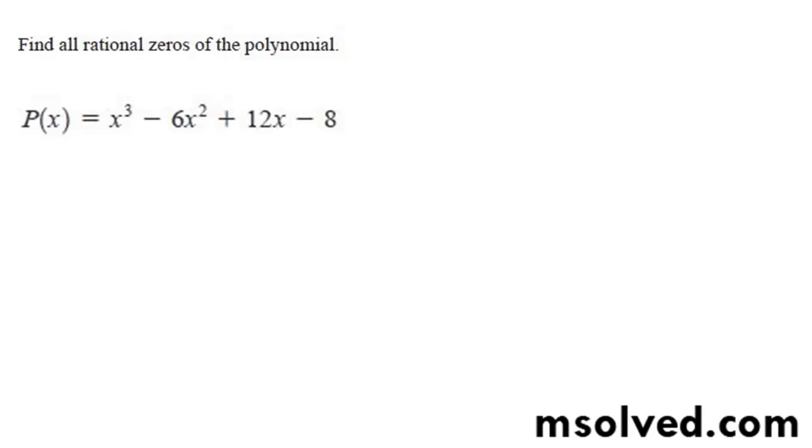Alright, we want to find all rational zeros for this polynomial, so our factors are plus or minus 1, plus or minus 2, plus or minus 4, plus or minus 8.